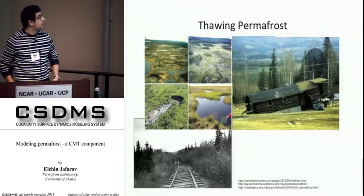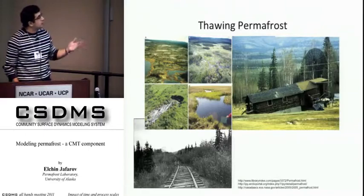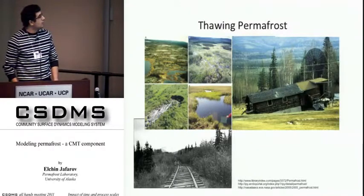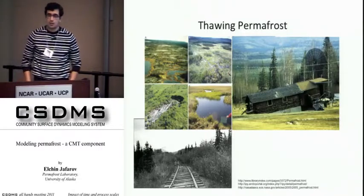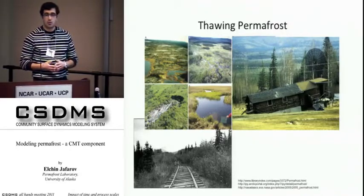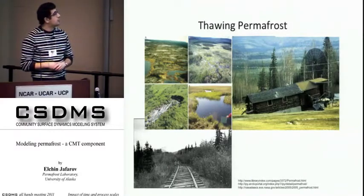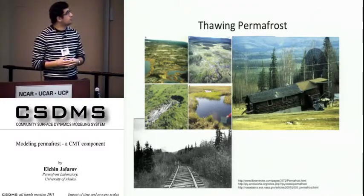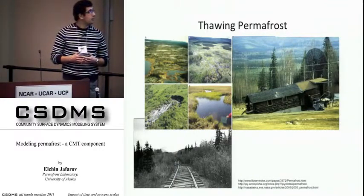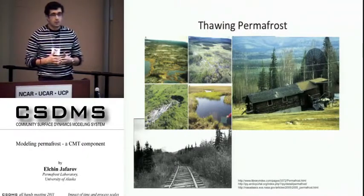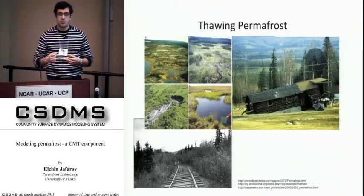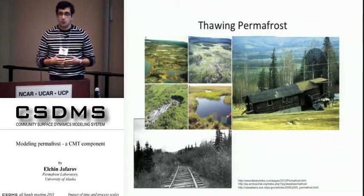When permafrost starts to thaw, this influences infrastructure and ecosystems. For example, in a catastrophic event such as a forest fire, the fire burns the trees but also burns the organic layer on top of the soil. That organic layer protects permafrost from thawing because it has very low conductivity during summer. When it's gone, the permafrost is vulnerable to thaw.